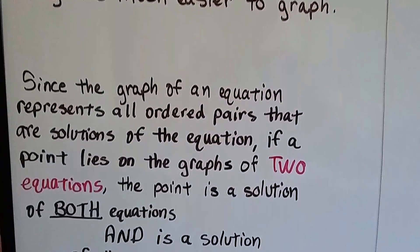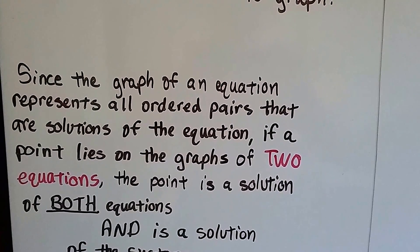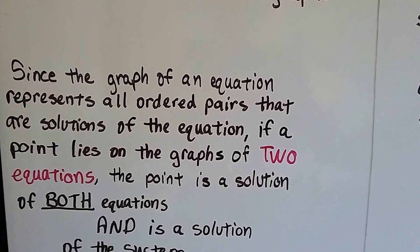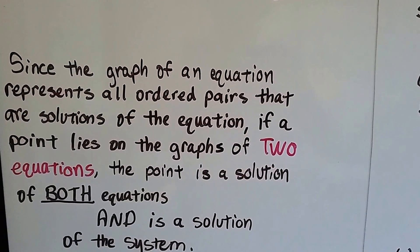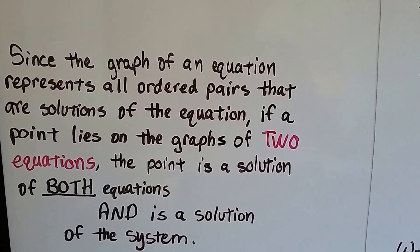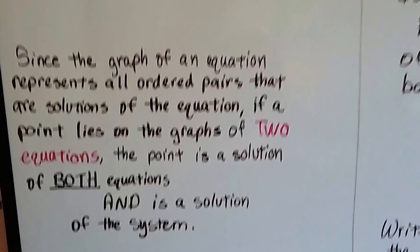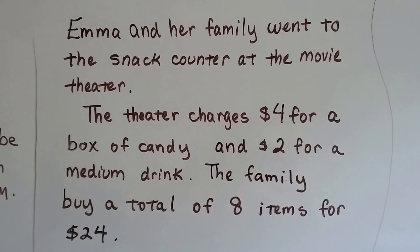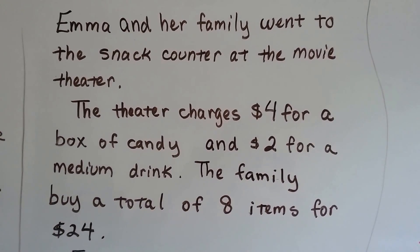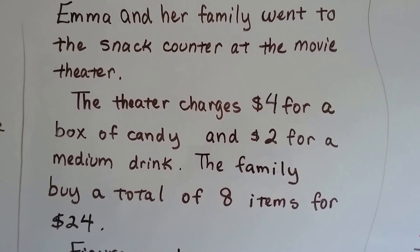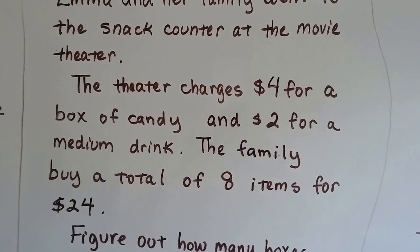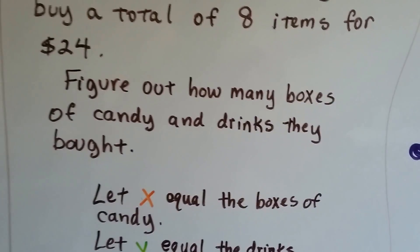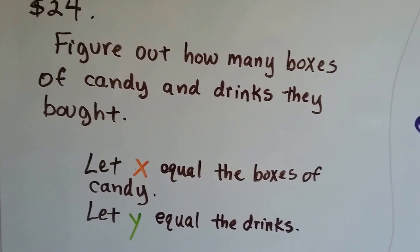Since the graph of an equation represents all the ordered pairs that are solutions of the equation, if a point lies on the graph of two equations, that point is a solution of both equations, and it's a solution of the system of equations. So here's our word problem. Emma and her family went to a snack counter at the movie theater. The theater charges $4 for a box of candy and $2 for a medium drink. The family buys a total of eight items for $24. Let's figure out how many boxes of candy and drinks they bought.